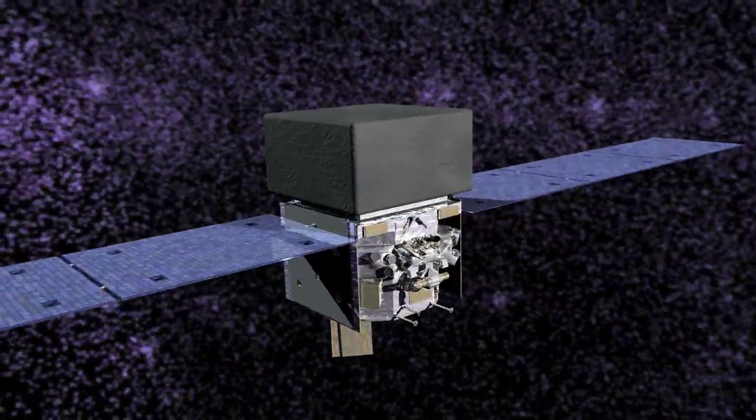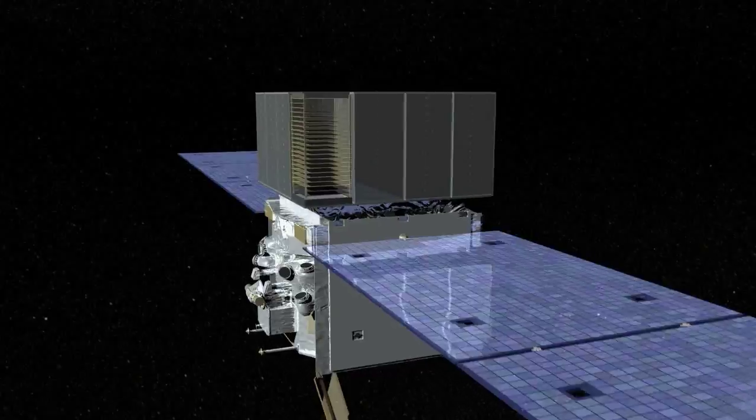Fermi has two instruments for observing gamma rays. Its Large Area Telescope, or LAT, maps gamma rays over the entire sky every three hours and is Fermi's main detector.